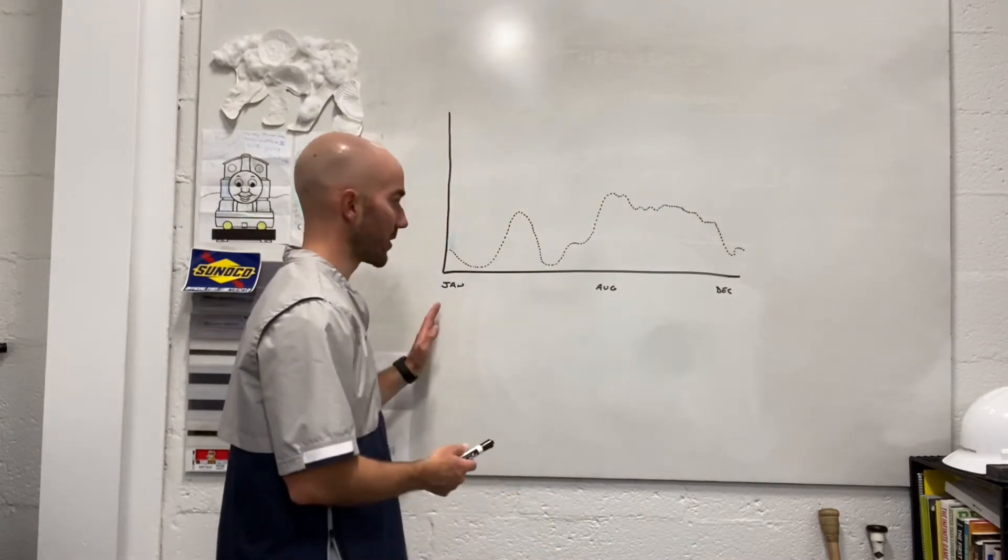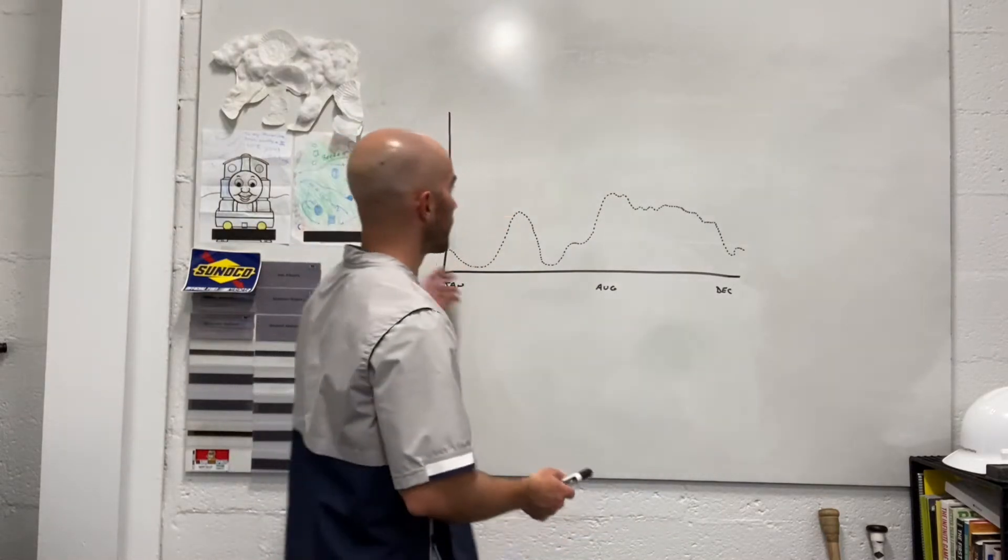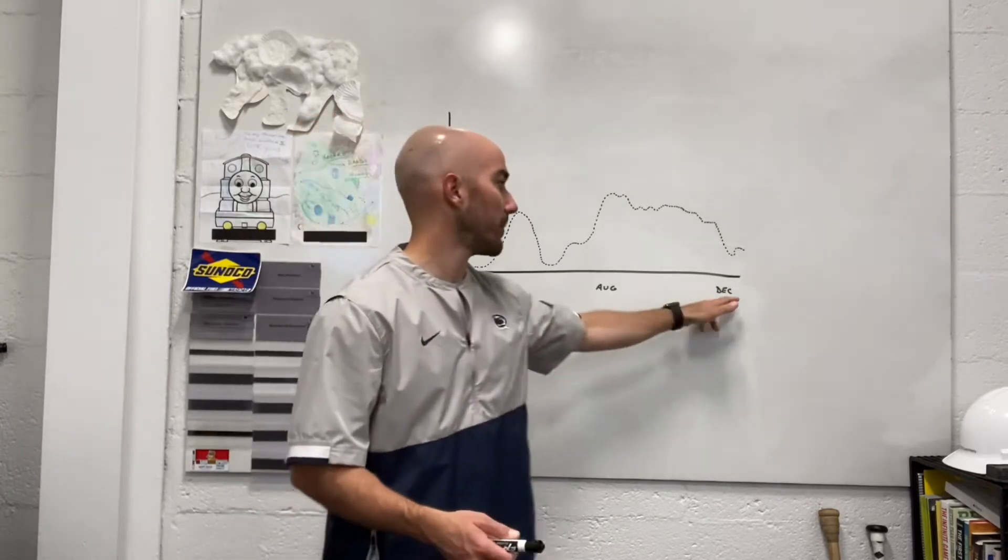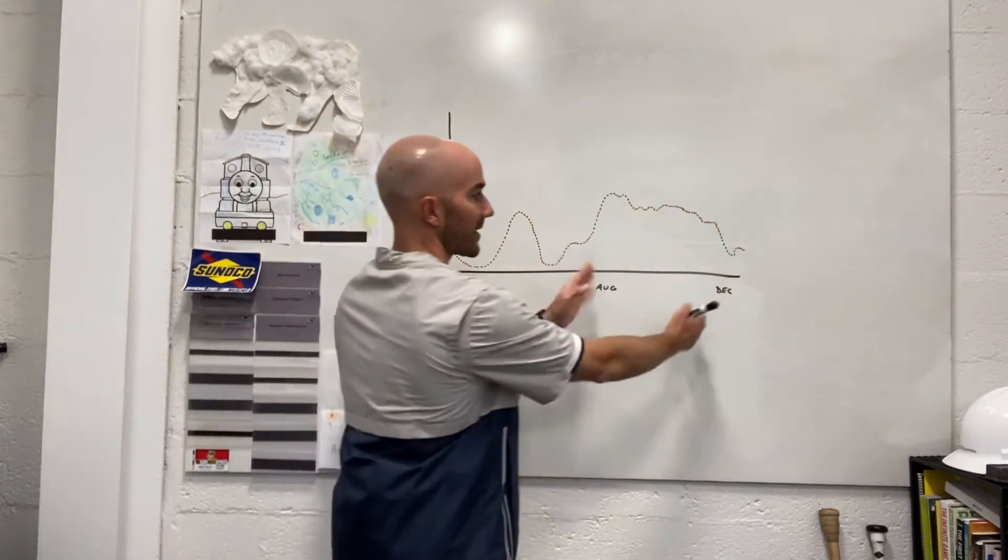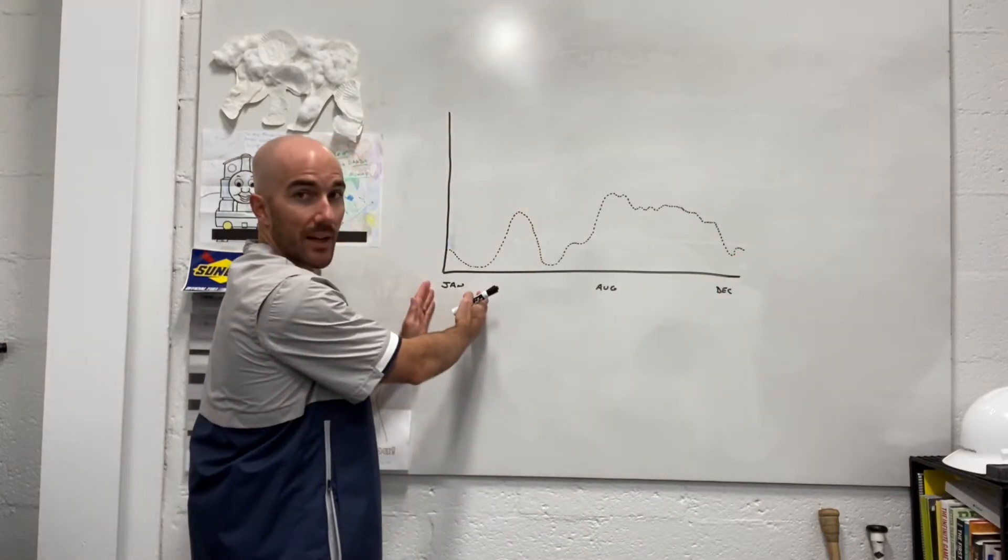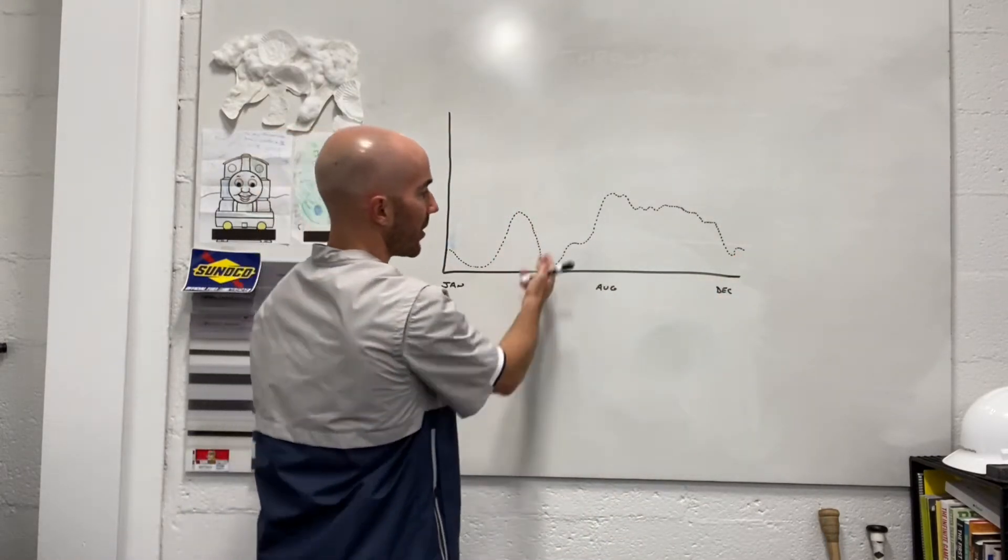So right here, this is a traditional football calendar with volume of throws on this axis and time across. You can see my season, you can see the bowl game, you can see ramping down following the season, spring, bowl, summer.